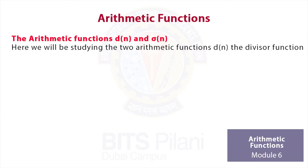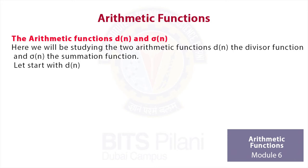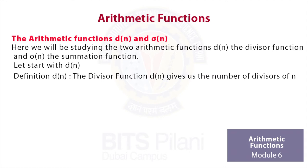How do we find the divisors of any given integer n? The integer n can have three different types of form. First, n can be a prime number p. As we know, a prime number has only two divisors: 1 and the number itself. So d(p) will always be 2. This is the first formula.